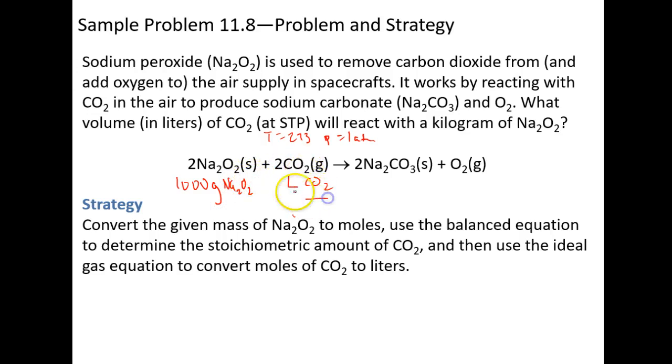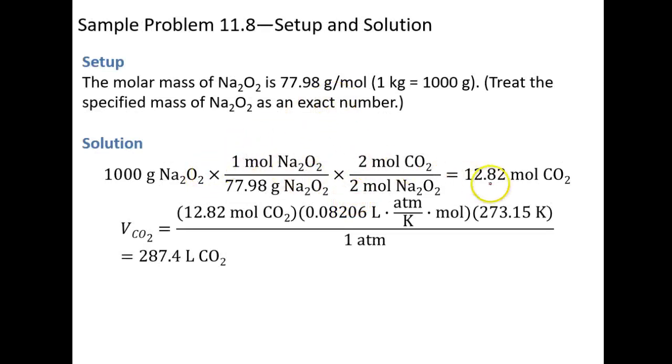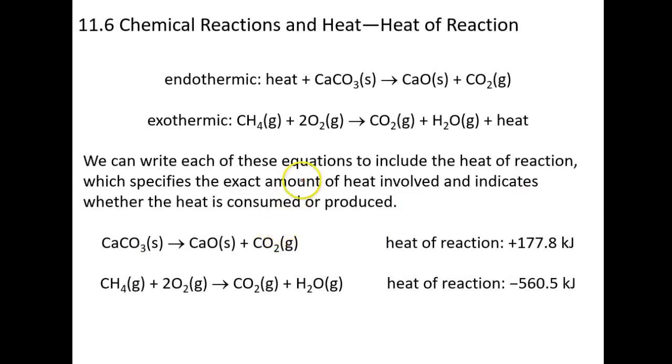So this should be pretty easy. You're finding liters of CO2. So you've got to convert your 1,000 grams of Na2O2 into moles of CO2. Once you get to moles of CO2, you enter it into PV equals nRT, and you solve for V. And this is basically how they do it. So here's moles of CO2. Plug that in. You have your R, you have your temperature, you have your atmospheres. And you should get 287.4. So why don't you try this on your own for practice? And when we come back to the next set of videos, we will do 11.6.